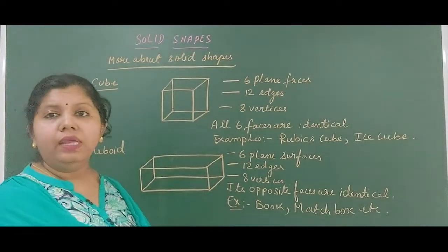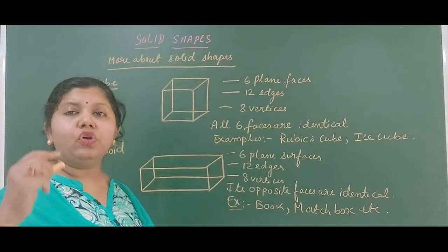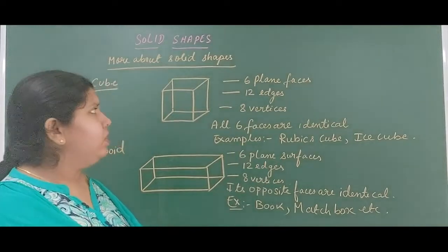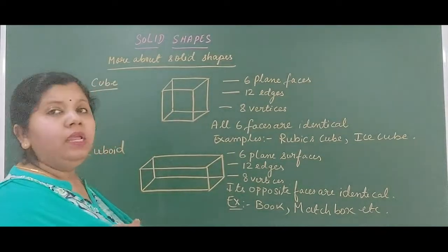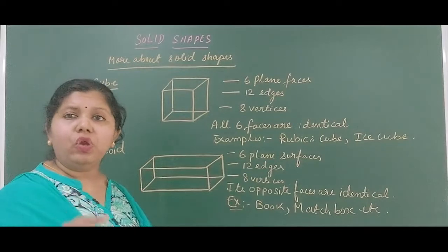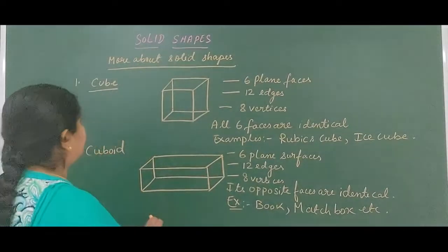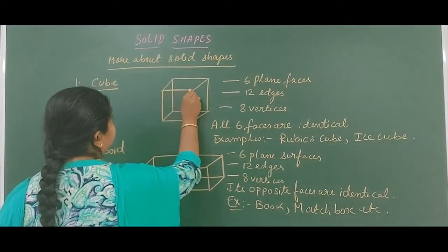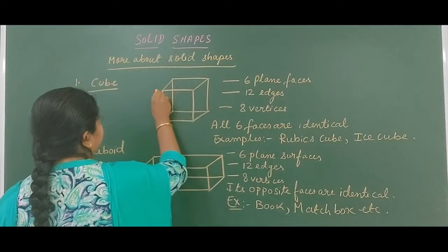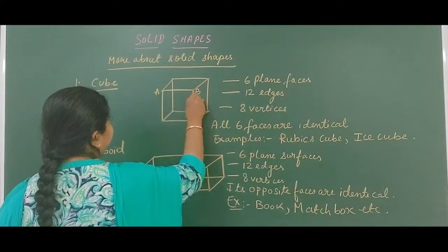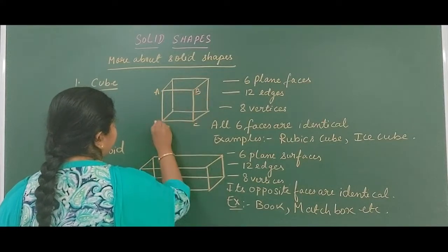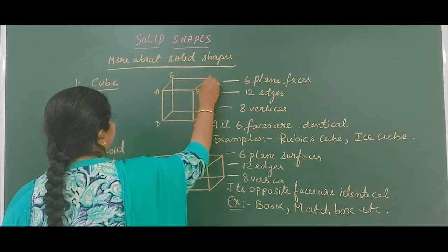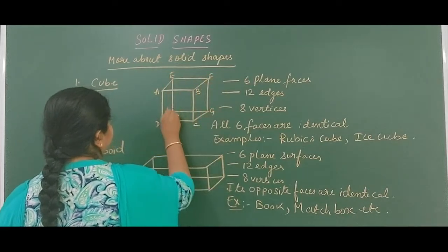Edges are the lines that join 2 faces. For example, if I look at this cube and label the vertices as A, B, C, D and E, F, G, H — then AB is one edge, BC is another edge. All such lines are the edges.